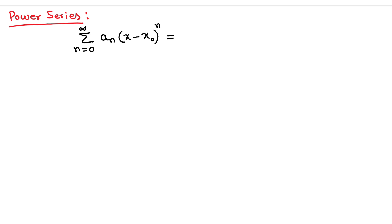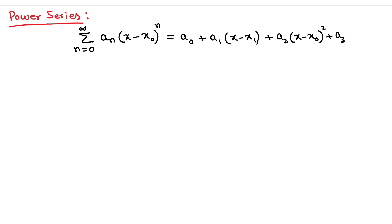If I expand this, for n equals to 0 the first term is a₀, plus a₁ times (x minus x₀) to the power 1, plus a₂ times (x minus x₀) squared, plus a₃ times (x minus x₀) cubed, plus dot dot dot. This series is called a power series.